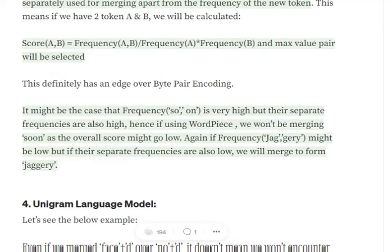Now assume we have tokens JAG and GARY, which are used very rarely in the dataset. Because JAG and GARY are rare, the score — frequency of JAGARY divided by frequency of JAG multiplied by frequency of GARY — becomes very high, since the denominator is also small when the tokens are rare in nature.